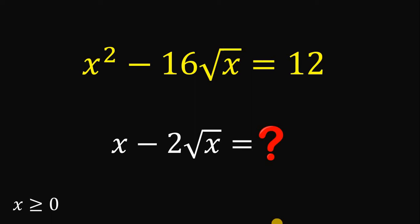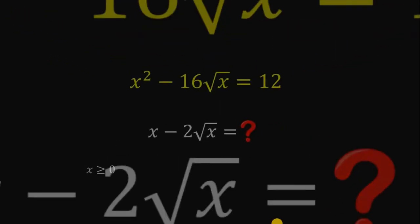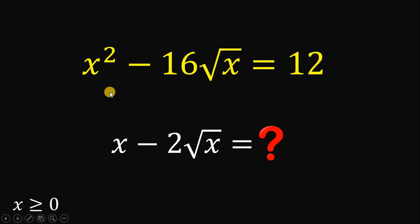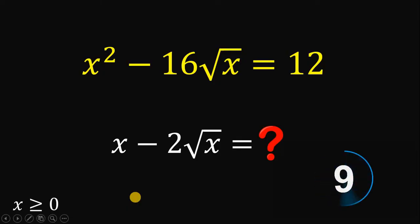Good day everyone. Today we will answer this algebra challenge, and the question goes like this. Given that x squared minus 16 times square root of x equals 12, our goal is to solve for the value of x minus 2 times square root of x, wherein x is greater than or equal to 0. You can pause this video if you want to give this problem a try.